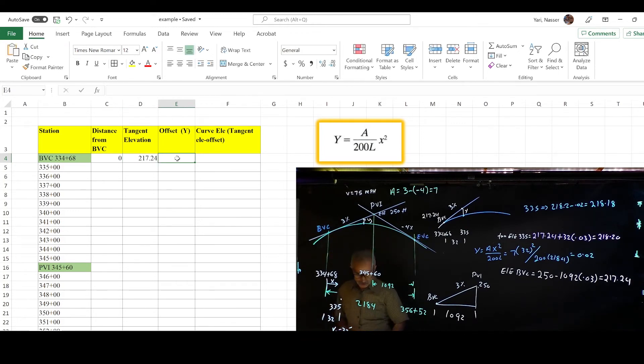And the offset, obviously, they're on top of each other right there, so that's 0. And the equation is going to be 217.24. And we did manually calculate that the difference between 334+68 and 335 came out to 32 feet, so type in 32 right there. And for the tangent elevation, you go ahead and put an equation. We're going to do tangent elevation, click on that, type in equal.